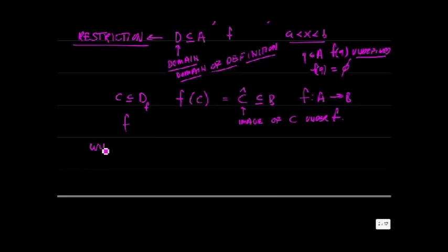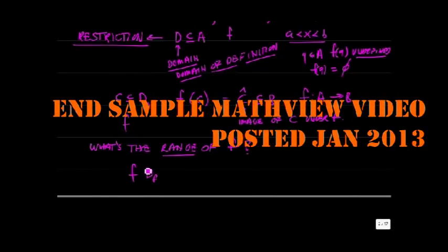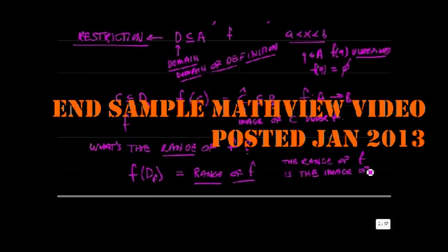What's the range of the function f? So if you have the domain of definition of f, and you evaluate f for every element of the domain of definition, that is equal to the range of f. So the range is the image of the domain of definition. And so what that means is that every element in the range of f is equal to the value of f for some element in the domain of f.